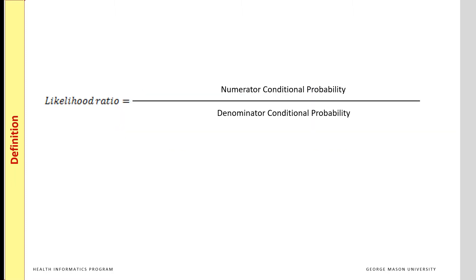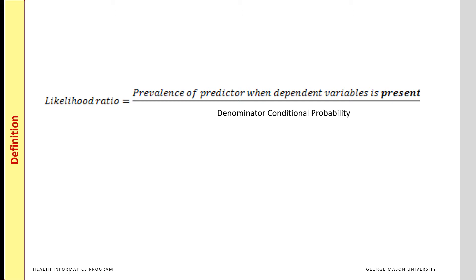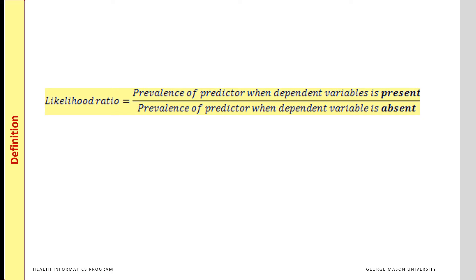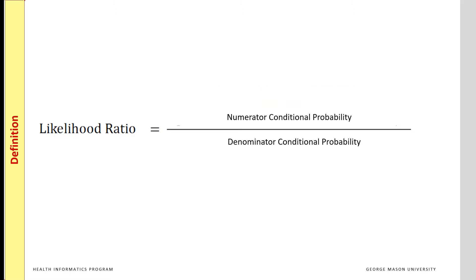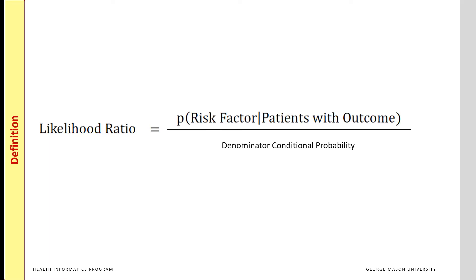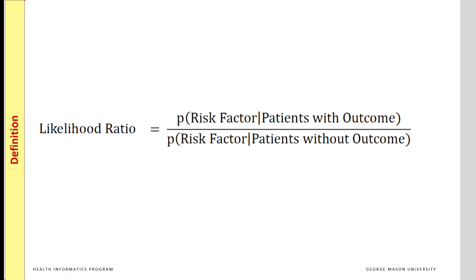The best way to think of the likelihood ratio is to imagine it as a ratio of two conditional probabilities. Conditional probabilities were introduced in an earlier video. A likelihood ratio is the ratio of the probability of the predictor when the dependent variable occurs — specifically, the ratio of the probability of observing the risk factor among patients with the outcome, divided by the probability of observing the same risk factor among patients without the outcome.